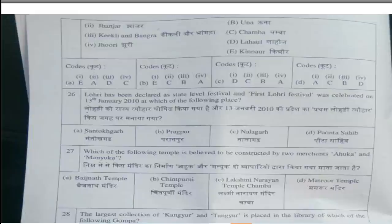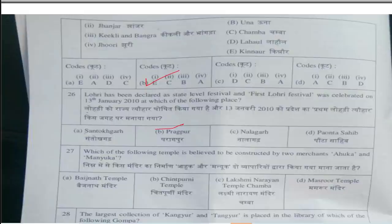Twenty-sixth question is: Lauri has been declared as a state level festival and the first Lauri festival was celebrated on 13th January 2010 at which place? The correct answer is option B, Braagpur. Twenty-seventh question is: Which of the following temples is believed to have been constructed by two merchants, Ahok and Manyuk? Answer is option A, Bajanath Temple.